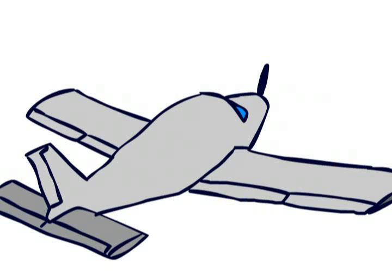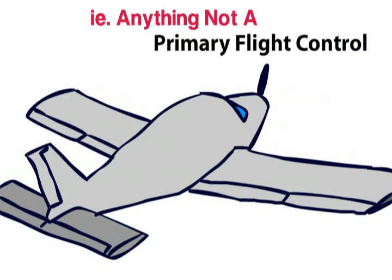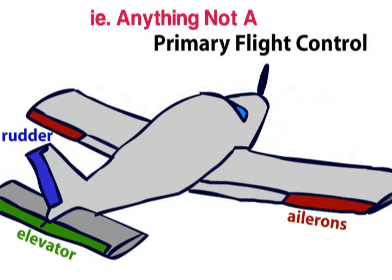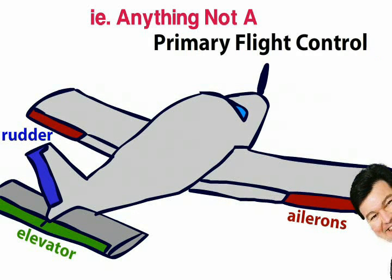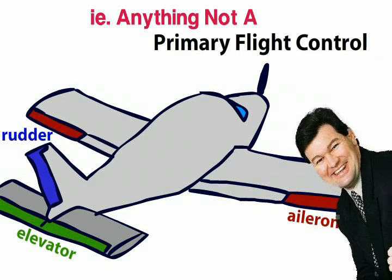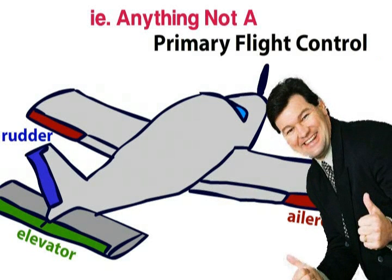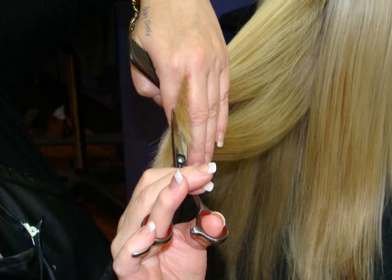Secondary flight controls are basically any flying control which are not the ailerons, elevator, or rudder, which were discussed in the last video. The first secondary flight control we will look at is elevator trim.